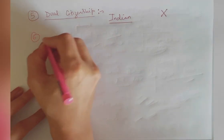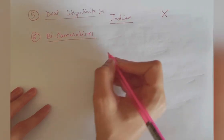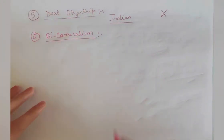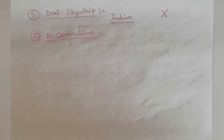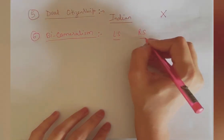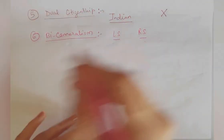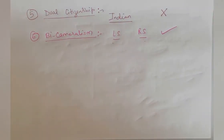The sixth feature is bicameralism — having two houses of parliament. One house represents the national level and the other represents the states. In America, the upper house is the Senate and the lower house is Congress. In India too we have bicameralism: one is the Lok Sabha and the other is the Rajya Sabha — one represents the states and the other represents the centre. So yes, we adopt this feature.